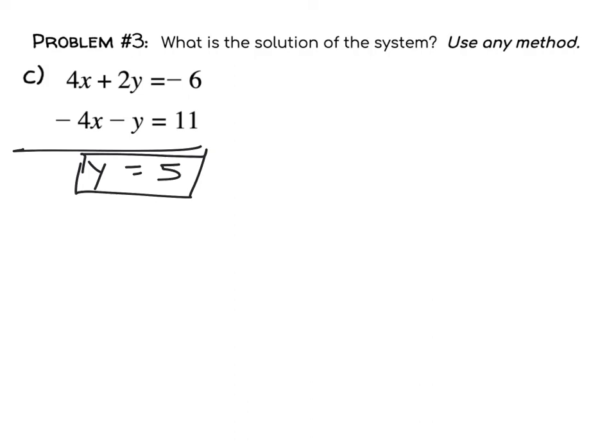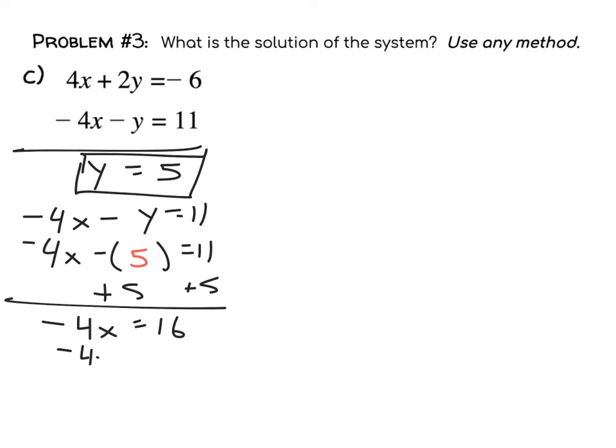I know that some of you have expressed that elimination isn't your favorite, but you should understand that in some cases it's actually the best method. This is a good example. Now you've got to solve for the other variable. Take negative 4x minus y equals 11 and substitute in 5 for y: negative 4x minus 5 equals 11. Add 5 to both sides to get negative 4x equals 16. Then divide both sides by negative 4.